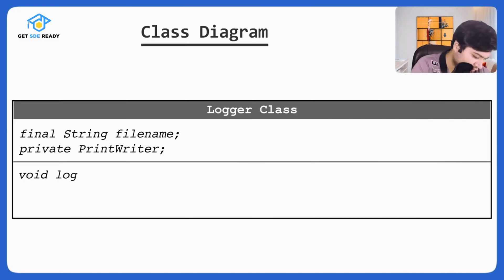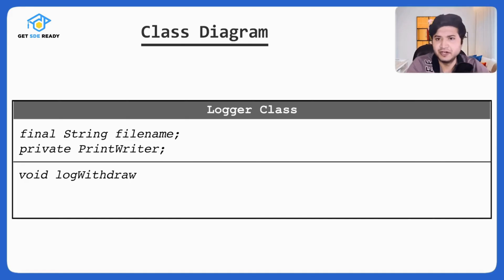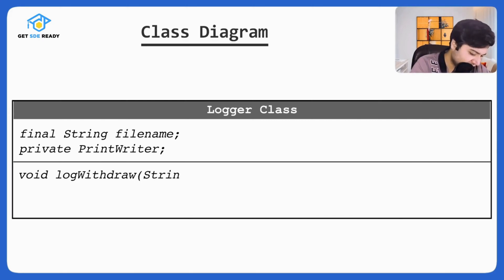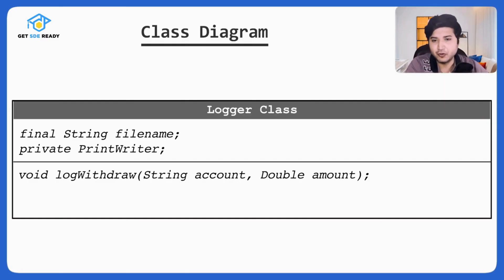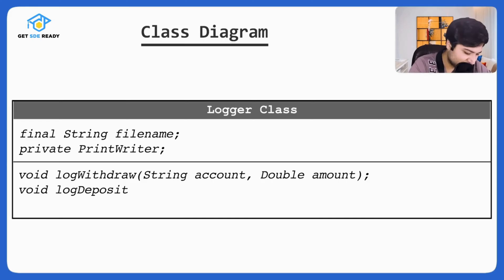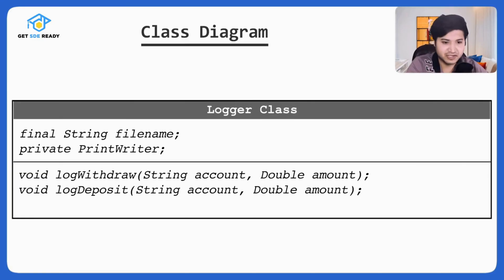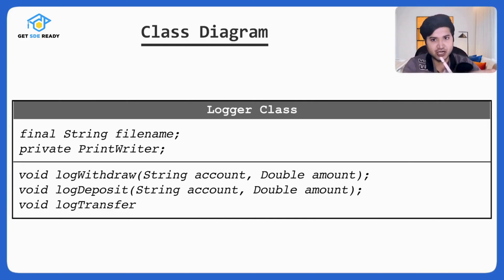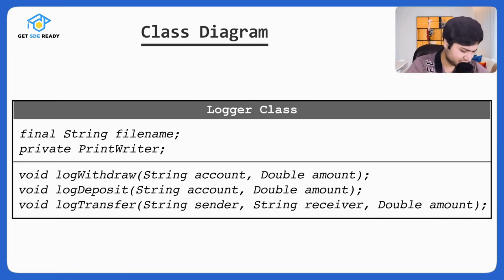The Logger has three methods. First, logWithdraw with return type void, taking a String account and a double amount. Second, logDeposit — void, taking a String account and double amount for the account money is deposited to. Third, logTransfer — void, named logTransfer, taking two accounts: sender and receiver, plus the double amount. With these three methods, we're pretty much done with the class diagram.